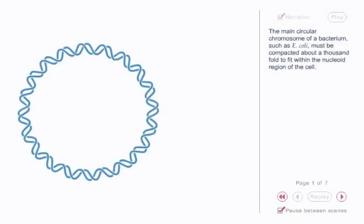The main circular chromosome of a bacterium, such as E. coli, must be compacted about a thousandfold to fit within the nucleoid region of the cell.